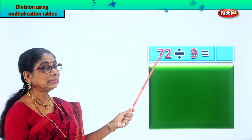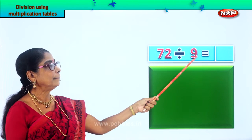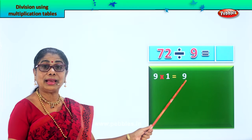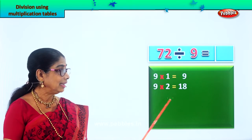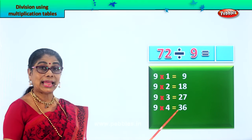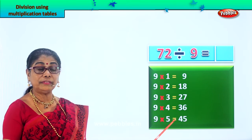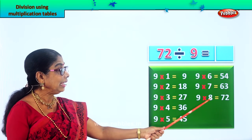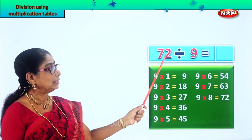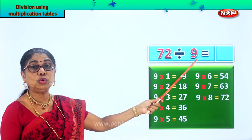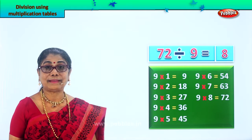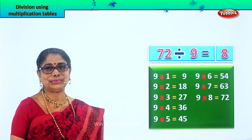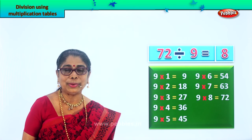Let's look at another sum. 72 to be equally divided into 9 groups. Let's write down the 9 times table: 9 ones are 9, 9 twos are 18, 9 threes are 27, 9 fours are 36, 9 fives are 45, 9 sixes are 54, 9 sevens are 63, 9 eights are 72 — and that's the number we want. 72 divided equally into 9 groups gives the answer 8. Reverse multiplication: 8 nines are 72.